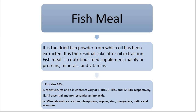Regarding its composition, fish meal includes protein at near about 65%, moisture, fat, and ash contents varying at 6–10%, 5–10%, and 12–33% respectively. All essential and non-essential amino acids are also part of the composition. Minerals such as calcium, phosphorus, copper, zinc, manganese, iodine, and selenium are also present. Fish meal is a very valuable food for poultry and cattle. Due to its high protein and vitamin contents, it increases milk and egg production, and it is demanded by fish feed manufacturers for its very rich nutritive values.